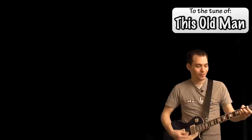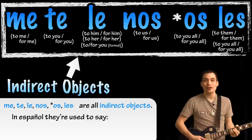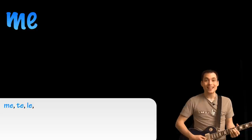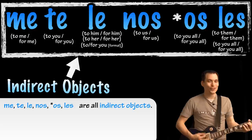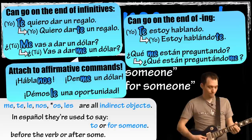Me, te, le, nos, les — are all indirect object pronouns in Spanish. They're used to say 'to or for someone' before the verb or after some verb forms. [Song sung three times: Otra vez. Una vez más.]